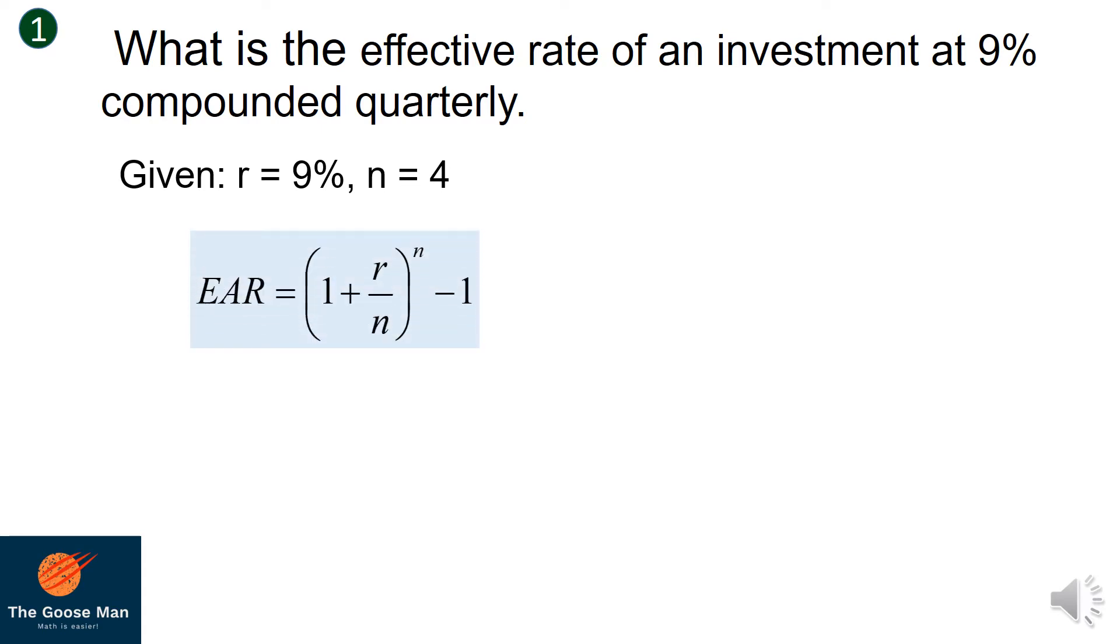We will use the formula EAR = (1 + r/n)^n - 1. Then we will substitute the values of r and n respectively. With the aid of our calculator, our EAR equals 9.31%. Take note that the effective rate is greater than our nominal rate of 9%.